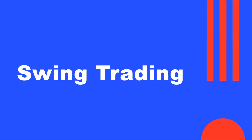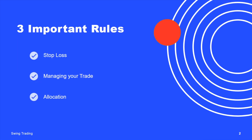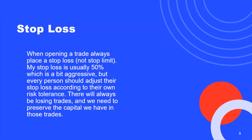Now to get to the three things that are very important: stop loss, managing your trade, and allocation. Stop loss — when opening a trade, always place a stop loss, not a stop limit. My stop loss is usually 50%, which is a bit aggressive, but every person should adjust their stop loss according to their own risk tolerance.